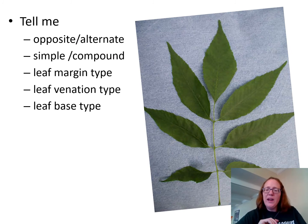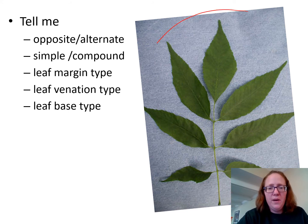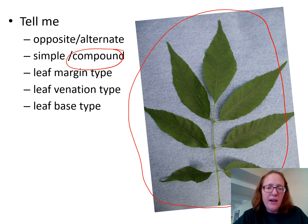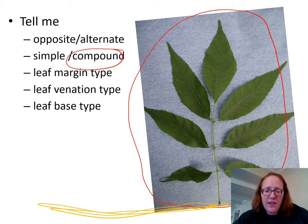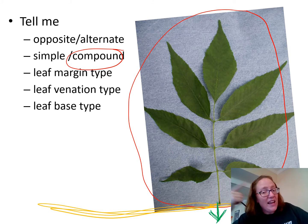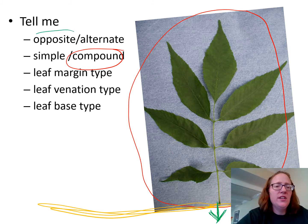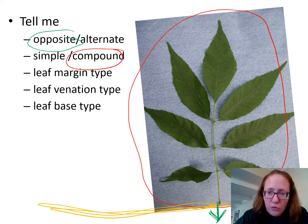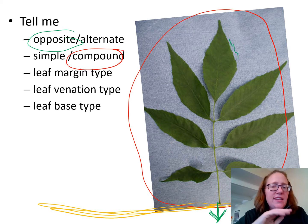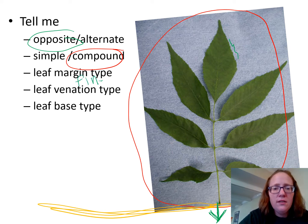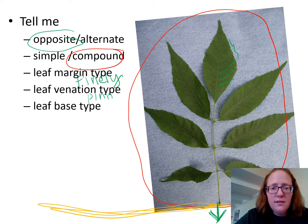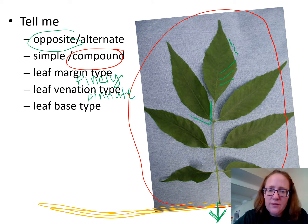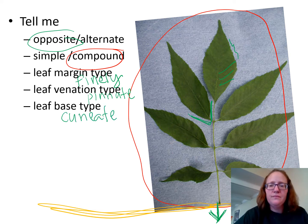Next we have ash. This whole picture is one leaf, which tells you automatically that it's compound. Ash is one of the MAD trees — maple, ash, dogwood — so it is opposite. For the margin, if you look closely you can see tiny teeth — it's not completely smooth — so this is finely toothed. The veins are going straight out, so that's pinnate. The base is triangular, making it cuneate. And there's ash.